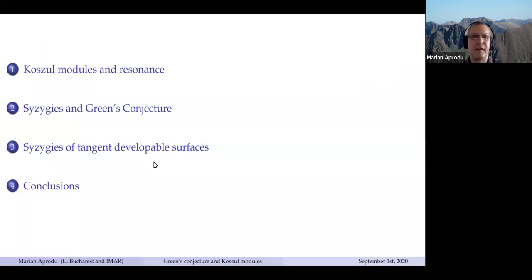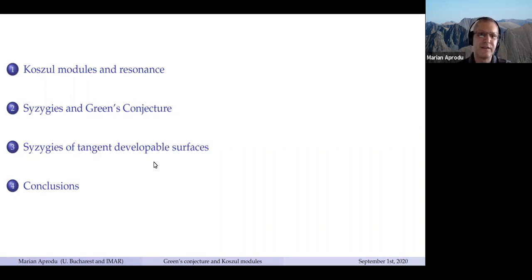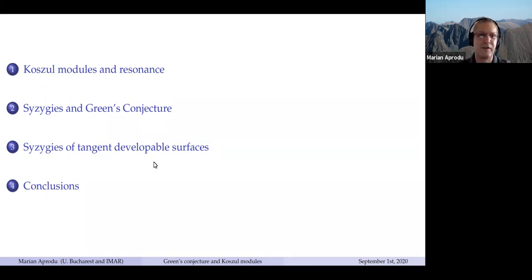Here's the outline of my talk. I would start with Koszul modules and resonance, then syzygies, Green's conjecture, syzygies of tangent developable surfaces, and jump to conclusions.